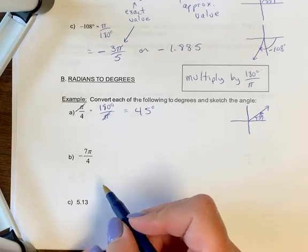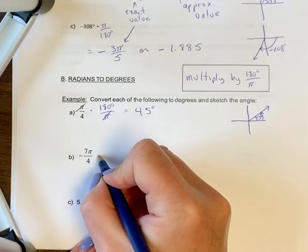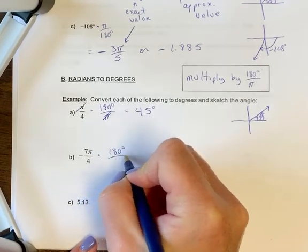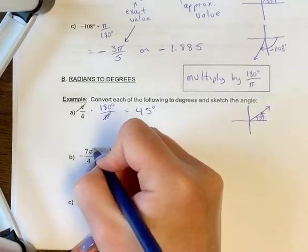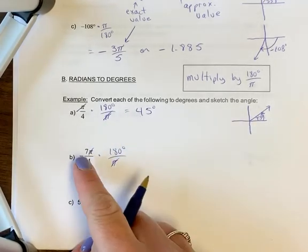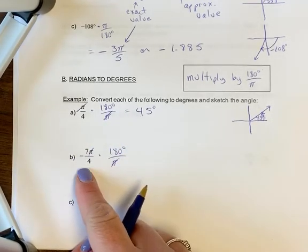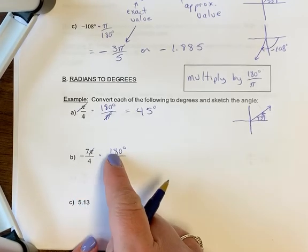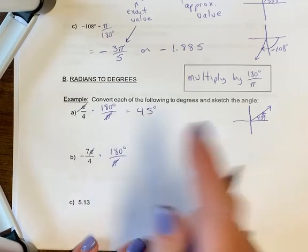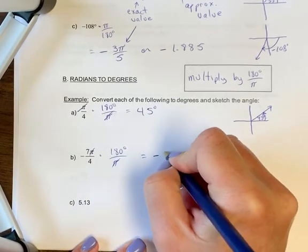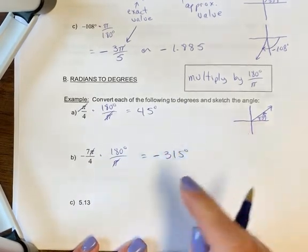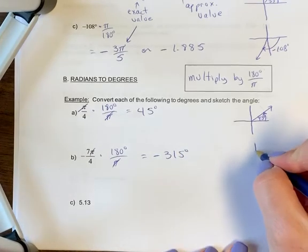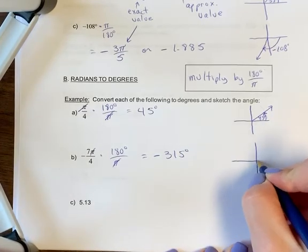Let's look at letter B. We're going to multiply this by 180 degrees over pi. We can cancel those out. And we can go 7 times 180 over 4. If you don't have a calculator, I would reduce first and go 180 over 4 was 45, and then go 7 times 45. It's still negative 315. So this is again easier for right now in degrees.